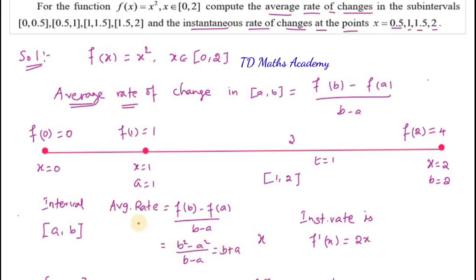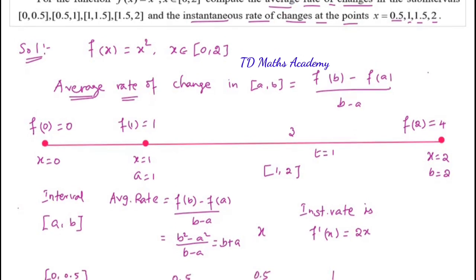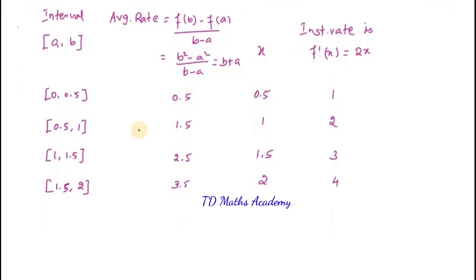The average rate formula simplifies to b plus a. So for each interval, add the two endpoints. For [0, 0.5]: 0.5 plus 0 equals 0.5. For [0.5, 1]: 0.5 plus 1 equals 1.5. For [1, 1.5]: 1.5 plus 1 equals 2.5. For [1.5, 2]: 2 plus 1.5 equals 3.5. These are the average rates of change for the given intervals.